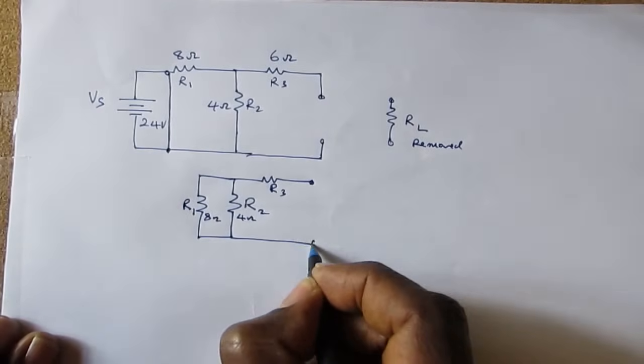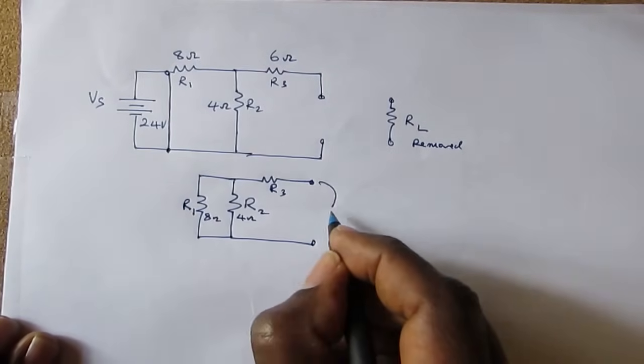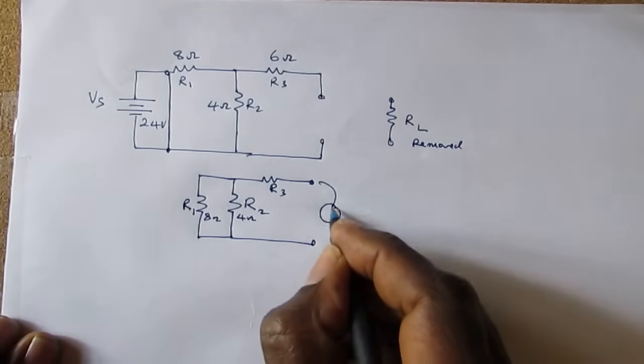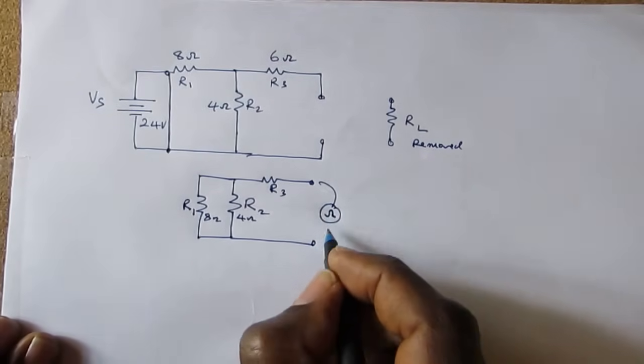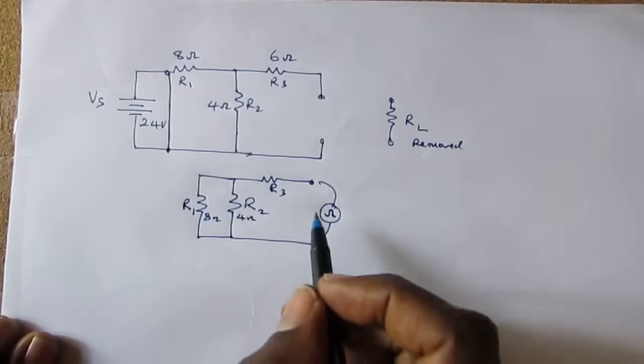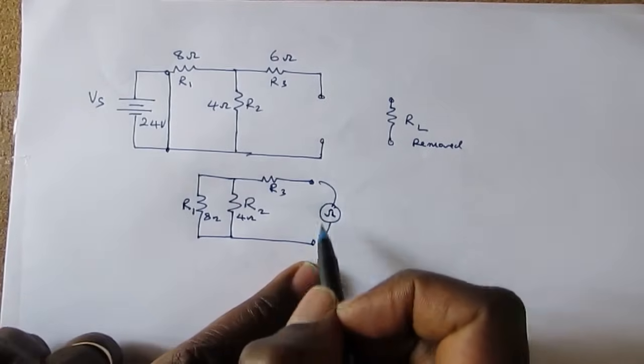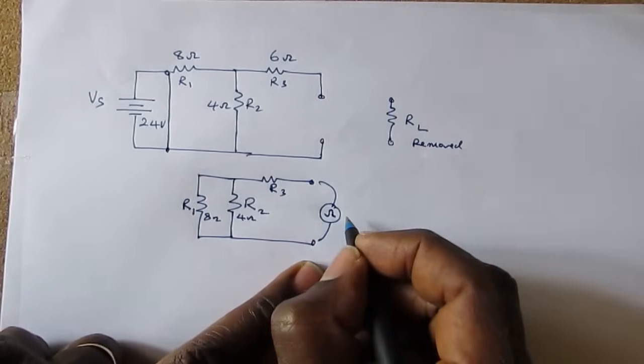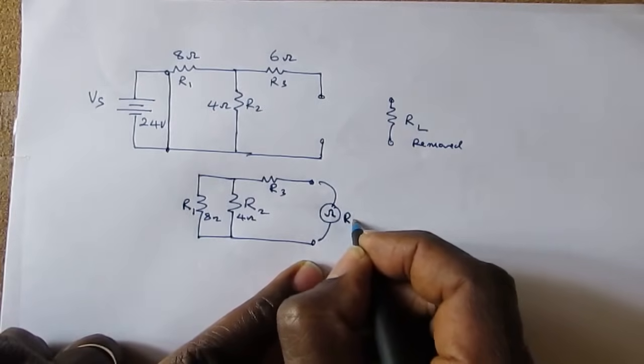And we have this point here. Across this point, we are looking to use an ohmmeter to measure the resistance. And the resistance measured across this point would be the Thevenin resistance.